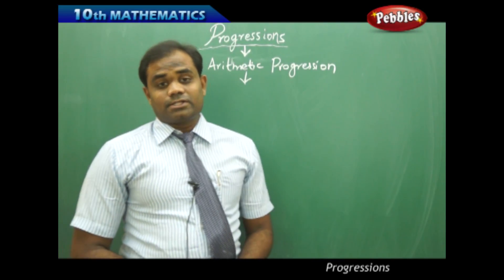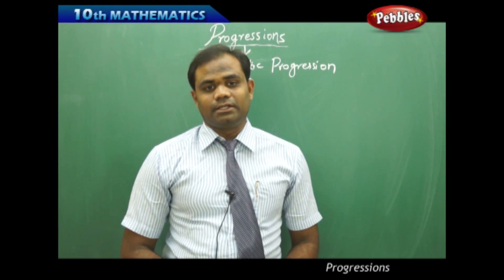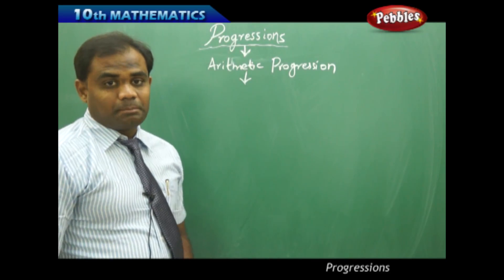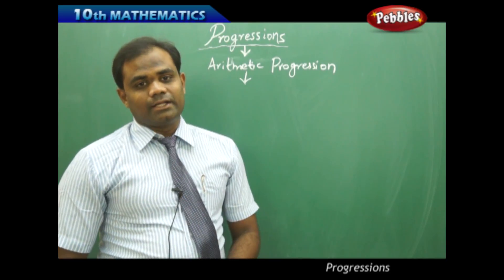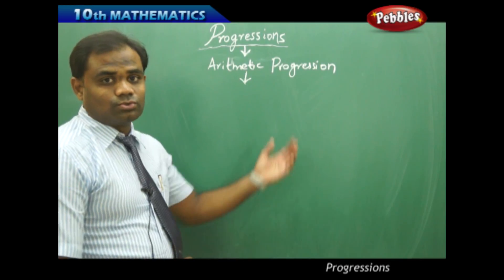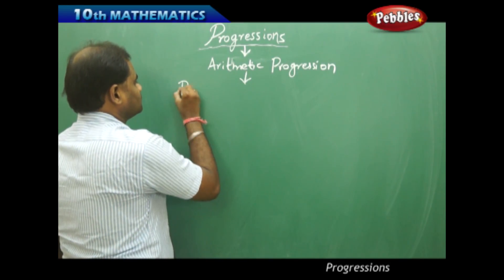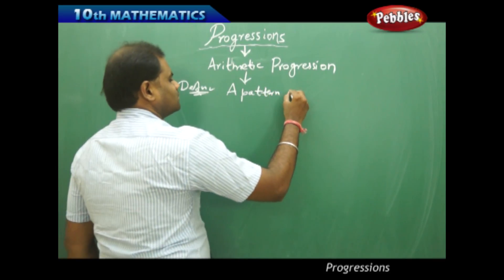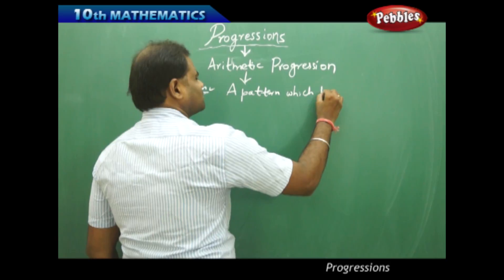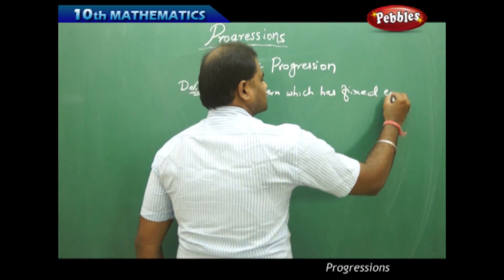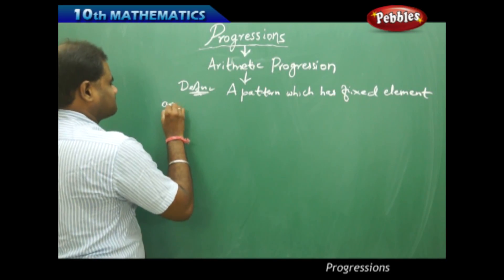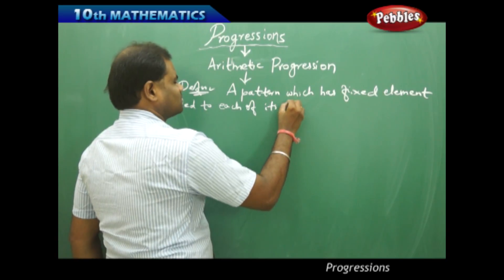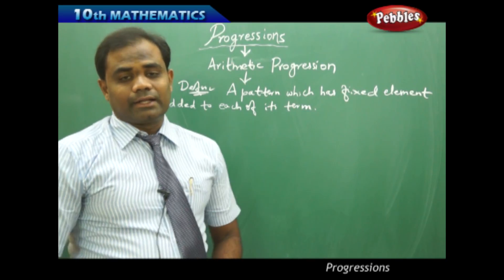So what is an arithmetic progression? It is the first type of progression or pattern which we want to study. An arithmetic progression is a pattern in which a fixed number is always added to each of the terms. To understand this more clearly, let's take the definition: a pattern which has a fixed element added to each of its terms is called an arithmetic progression.